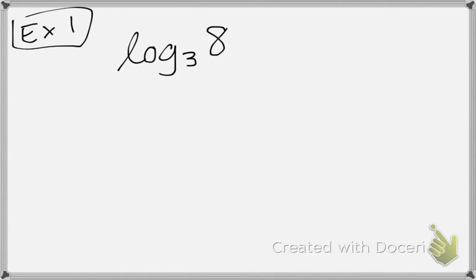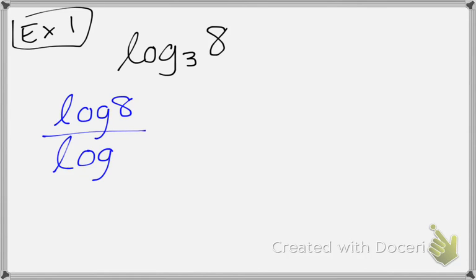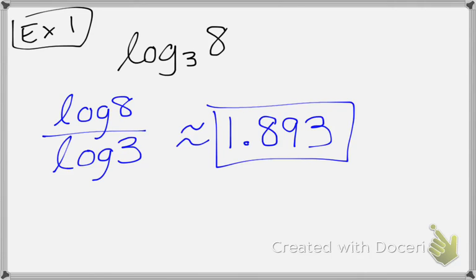Let's do one quick example. If I have log base 3 of 8, my calculator cannot compute this directly. But using the change of base formula, I can rewrite it as common log of 8 over common log of 3, which I can plug into my calculator to get a decimal approximation of about 1.893. Just remember, we typically only use this formula to help us convert to a logarithm that our calculators can use. Alright, that's all for today — thank you for listening.